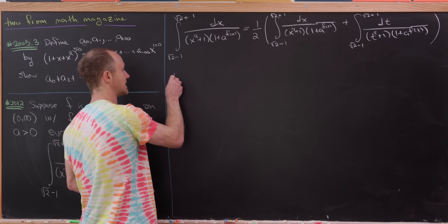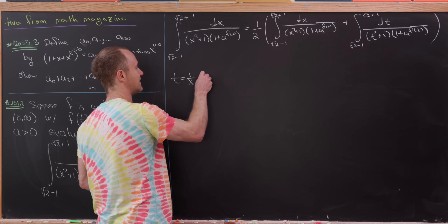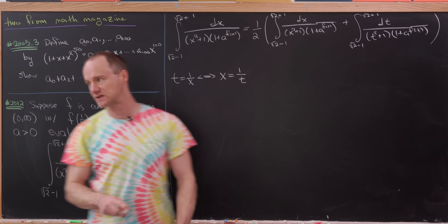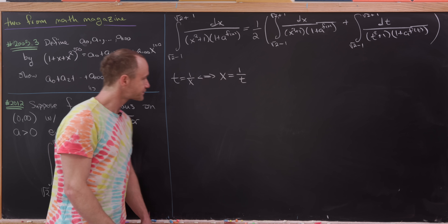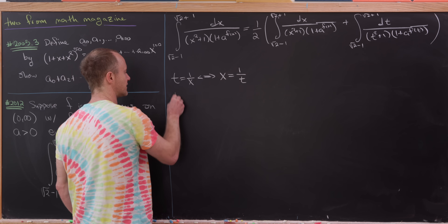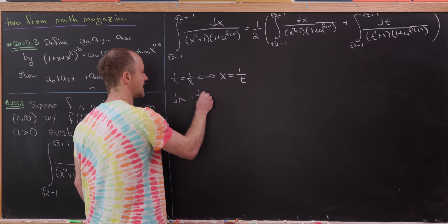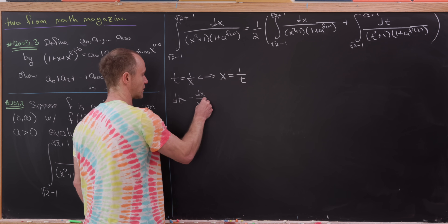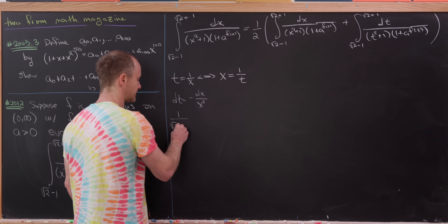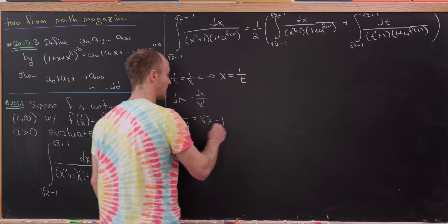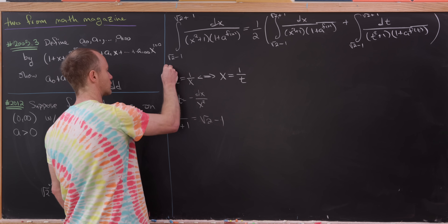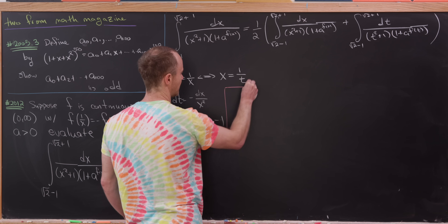The substitution is t = 1/x in that second integral — pretty obvious because we want to use the functional equation f(1/x) = −f(x). Note that if t = 1/x then dt = −dx/x². Also observe that 1/(√2 + 1) = √2 − 1, meaning the two bounds of integration are reciprocals of each other.